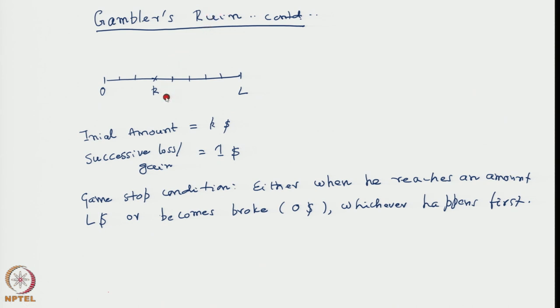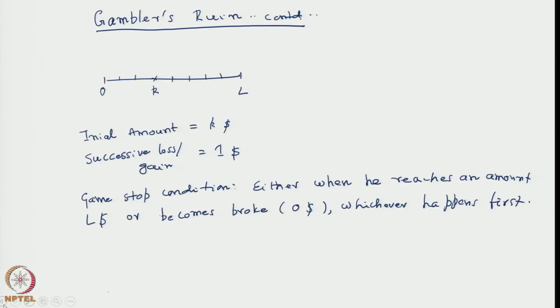A very lucid interpretation of the two-barrier problem is the so-called gambler's ruin problem. A person who gambles starts with an initial amount of K dollars, and the game consists of each time — say tossing a coin or randomly taking a decision — randomly either losing or gaining one dollar.